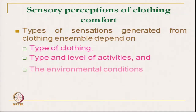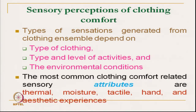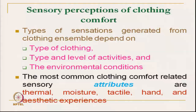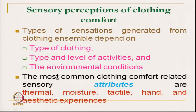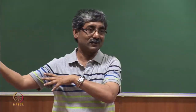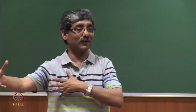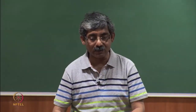The sensory perception of clothing comfort — the type of sensation generated from clothing depends on the type and level of activities and environmental condition. For a particular clothing, if we change the activity, our sensation will be different. Clothing is not the only factor — all three factors (clothing, activity, environment) have to come together for the final sensation. If we keep the activity same but change the environment, we will get different sensations — it is an interrelationship between all these parameters.